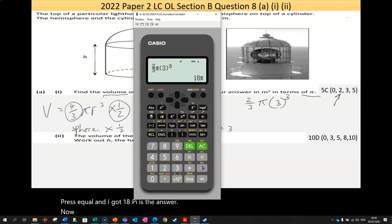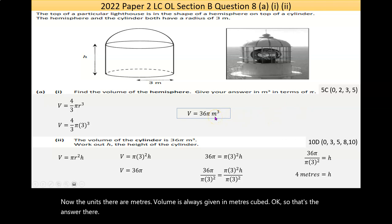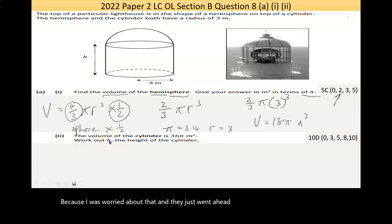Now, the units there are meters. Volume is always given in meters cubed. So that's the answer there. Actually, I just realized here that's not the answer. It should be, what was it again? 18 pi. So the volume is equal to 18 pi meters cubed. I was worried about that, and I just went ahead and checked the marking scheme, and I was wrong in the notes, so I've amended them.